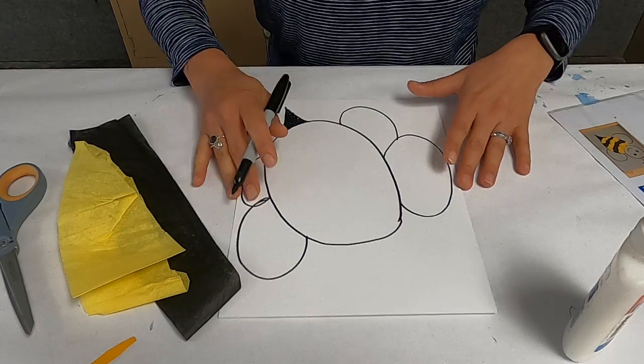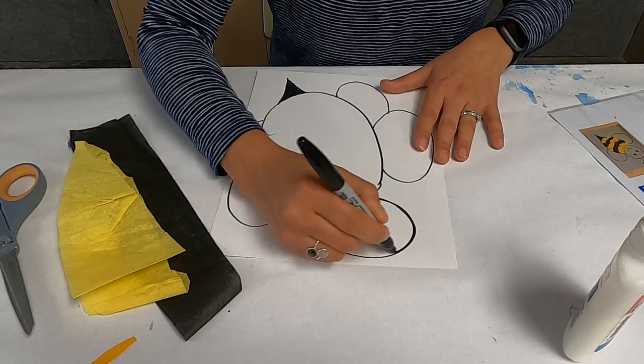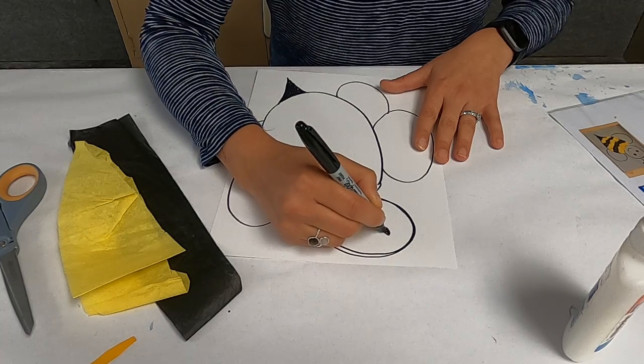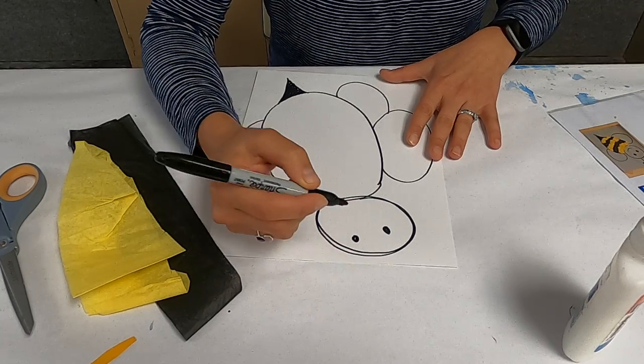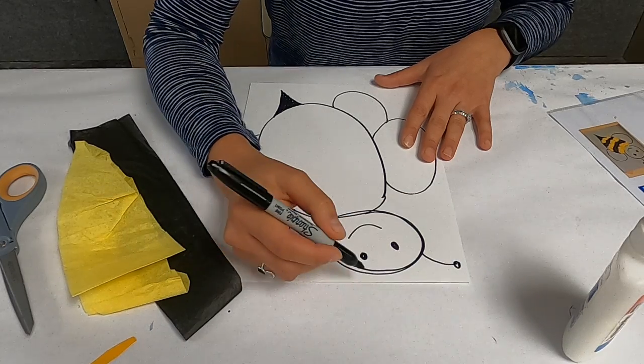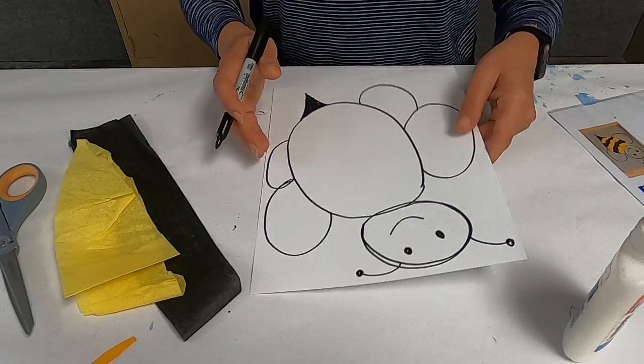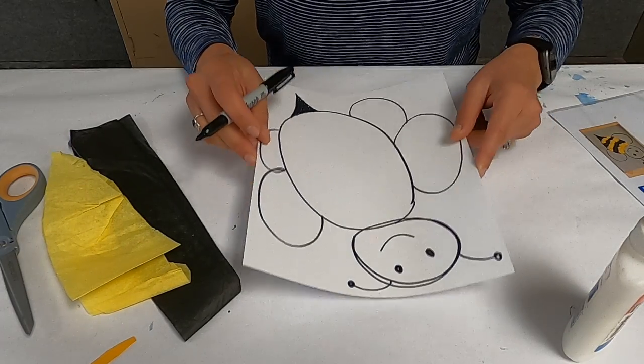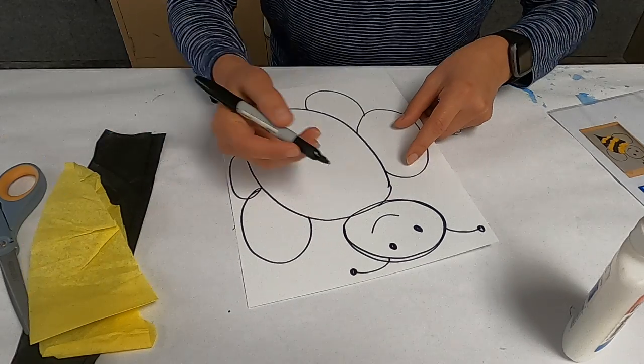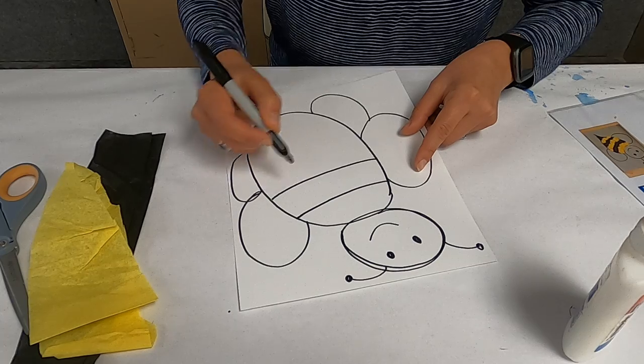There's really no right or wrong way to draw a bee. And there's his head, smiley face, his antenna, one there, one there. It's a very rough bee. You can probably do a lot better than I did, but I just wanted to show you the very basic way of doing this.